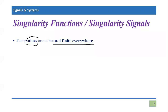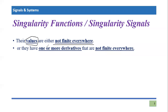Furthermore, another definition found in literature states that whenever a signal, or its first derivative, or any higher-order derivative — second derivative and so on — is not defined, not finite, or does not simply exist at any point in time, then that signal is called a singularity signal or singularity function in terms of calculus.